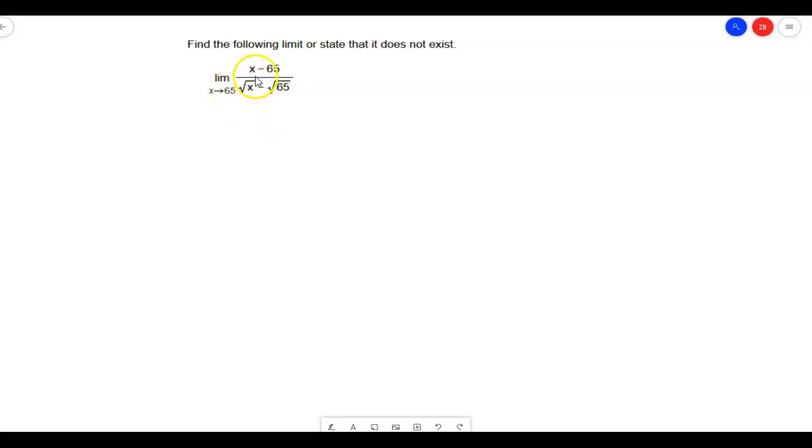So when I plug 65 in there, this ends up giving me 0 over 0. And what is 0 over 0? That's the indeterminate form. And the indeterminate form tells me I can keep going.